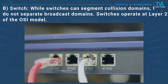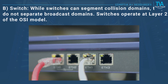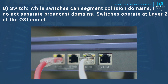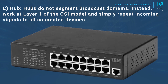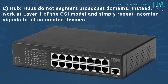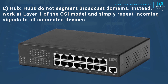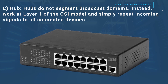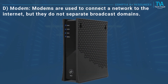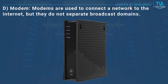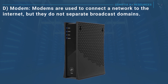B, switch: while switches can segment collision domains, they do not separate broadcast domains. Switches operate at layer 2 of the OSI model. C, hub: hubs do not segment broadcast domains; instead they work at layer 1 of the OSI model and simply repeat incoming signals to all connected devices. D, modem: modems are used to connect the network to the internet but do not separate broadcast domains.